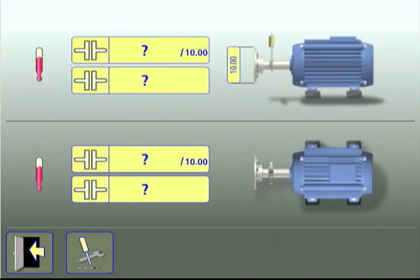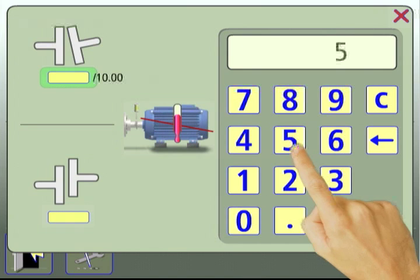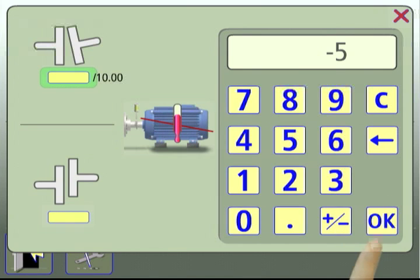Now you can enter gap difference and offset values for both vertical and horizontal dynamic growth. Touch the first yellow box to enter a gap difference value in the vertical plane. Use the keypad to enter the value and then touch OK.